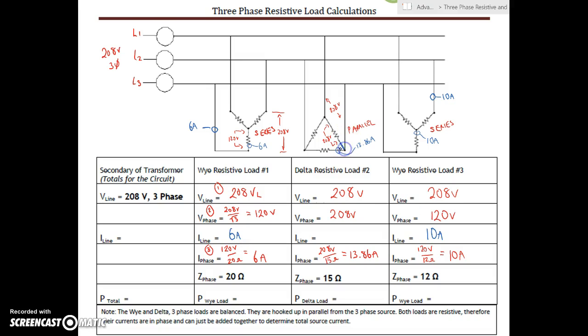Now looking at the delta, there are two paths for current to flow when it gets to this junction here. So your line current is going to be greater. So this value right here is going to be 13.86, the value that we had inside the circuit, times root 3. And that gives you 23.97 amps. So on the line current for this delta, it's always higher than the phase current. And it gives us root 3 of 13.86, which is 23.97.